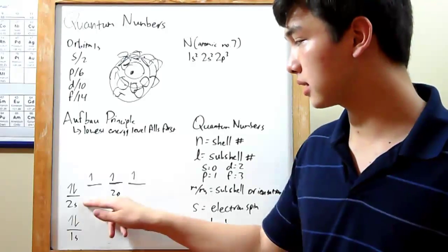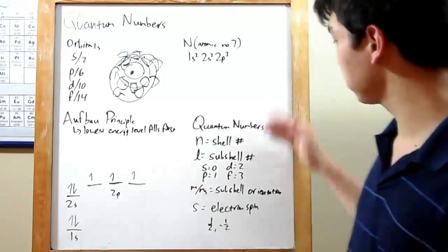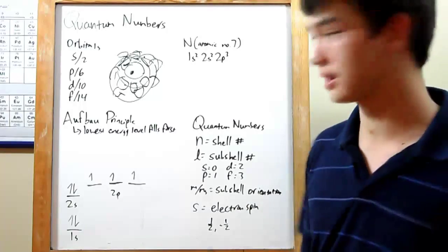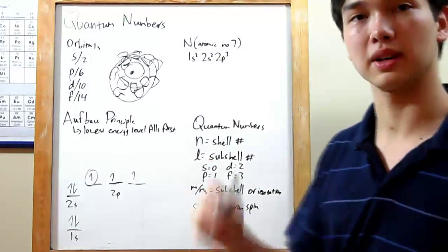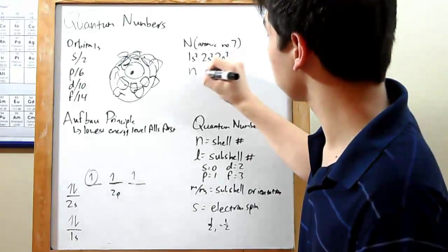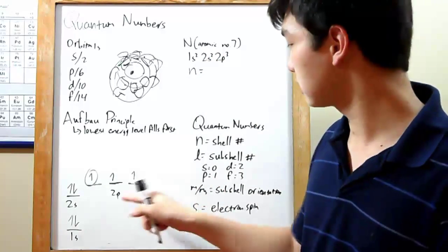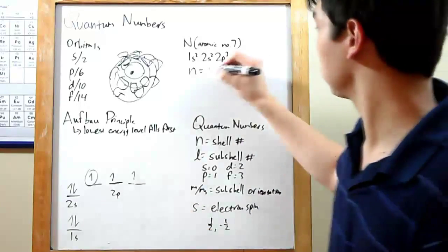So having filled in this chart with electrons in each of their shells, we can build up some quantum numbers for any one of these electrons. Let's take this one for an example. Our first quantum number is n. That's your shell number. That's just the big number next to your letter for your orbital. So that's a 2.